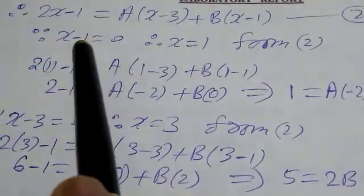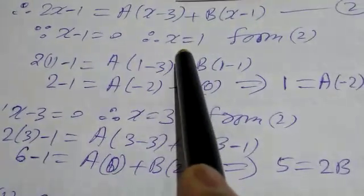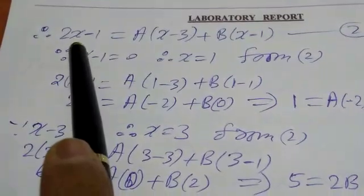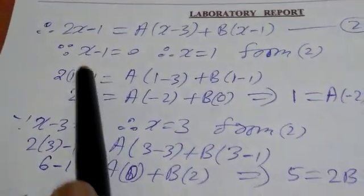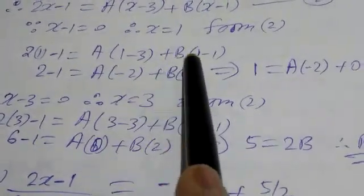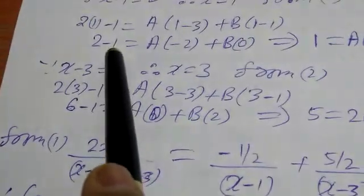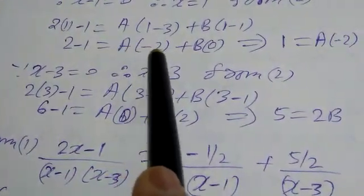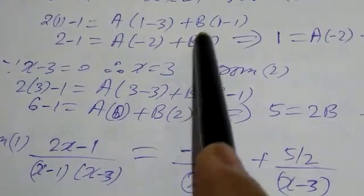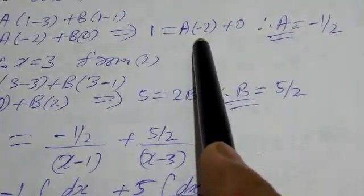Again substituting values one by one. Since (x minus 1) is equal to 0, therefore x is equal to 1. From equation 2: 2(1) minus 1 equals A into (1 minus 3) plus B into (1 minus 1). So 1 equals A into minus 2 plus B into 0, giving 1 equals minus 2A. Therefore A is minus 1 upon 2.